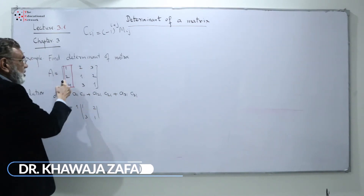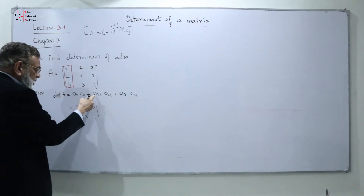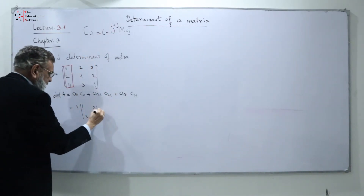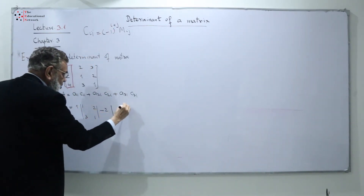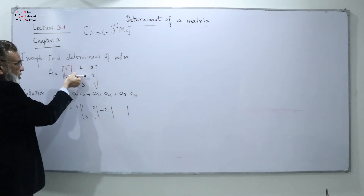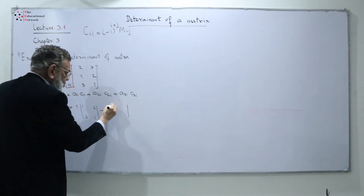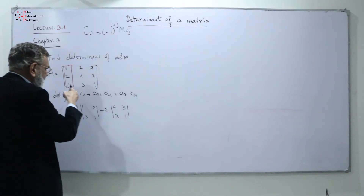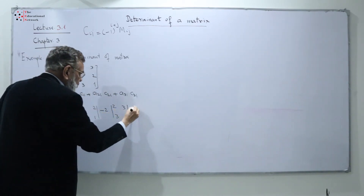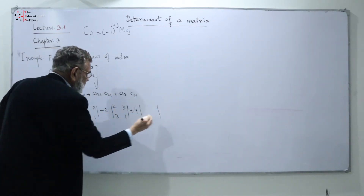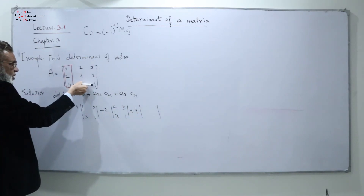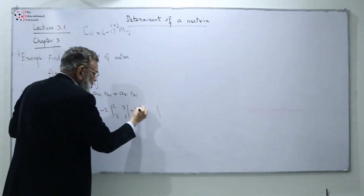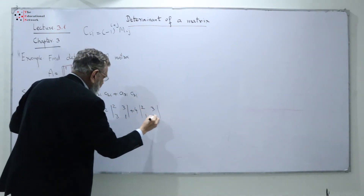Next we have A21·C21. The sign for C21 is (-1)^(2+1), which is minus. So we get minus 2 times the cofactor — blocking that row and column gives the 2x2 matrix with entries 2, 3, 3, 1. Then A31 is 4, and for C31 we block that row and column to get the 2x2 matrix with entries 2, 3, 1, 2.